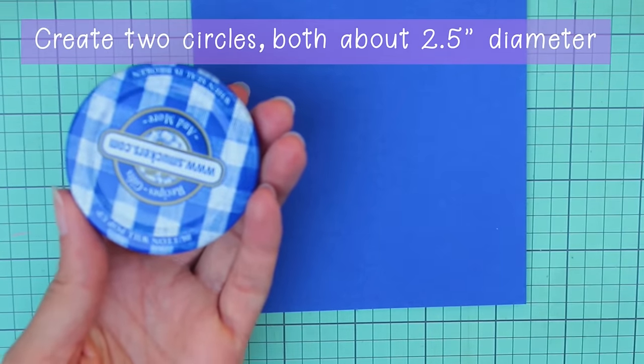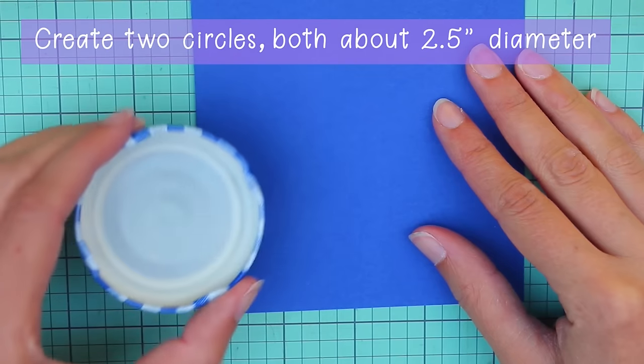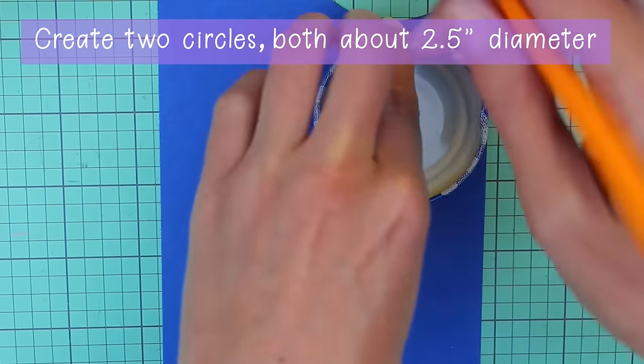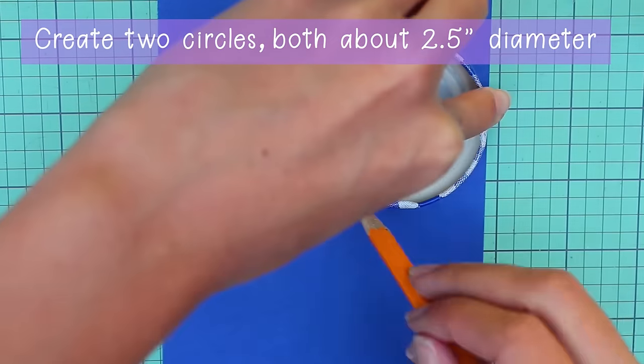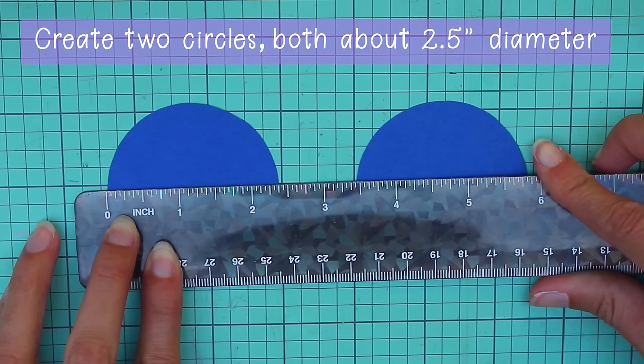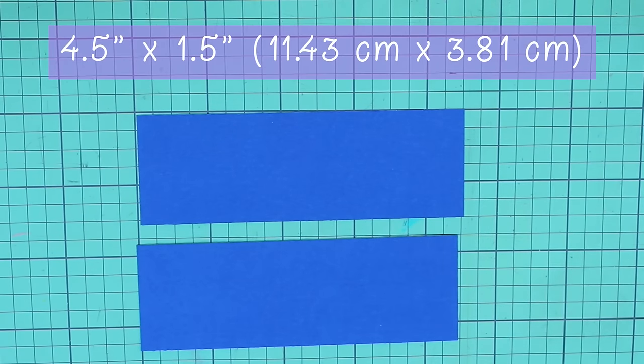Next, you'll need to cut two circles that are about two and a half inches in diameter. For that, I found this jam lid that was about that size and I just traced two of those onto the paper. You can make yours bigger or smaller if you'd like. So I traced those and then cut them out, and they're just under two and a half inches in diameter.